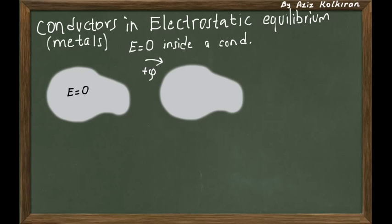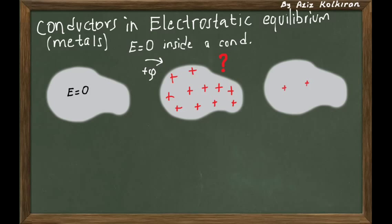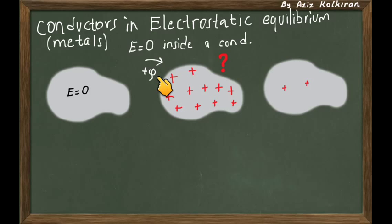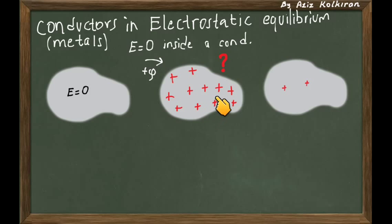What happens if we charge a conductor — if we put extra charges? Let's say extra positive charges: where do these charges go? Do they distribute themselves uniformly everywhere inside the conductor, or do they go somewhere else? Even if we charge a conductor for a very short amount of time — typically on the order of nanoseconds — once you charge the conductor with extra charge, these charges will distribute themselves on or inside the conductor so that all charges will be at rest after a very short period of time.